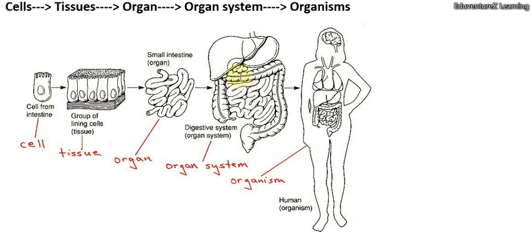The digestive system is one part of human beings, in which we have our circulatory system, respiratory system, digestive system — all these are part of human organisms, human beings and animals.